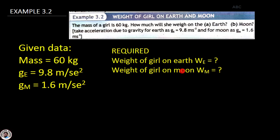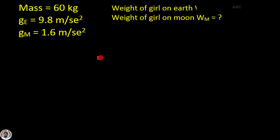تو اس کے لئے میں use کرتا ہوں equation: W = mg۔ یہ equation میں use کروں گا، اور اس equation کے ذریعے میں weight of girl on Earth find out کروں گا اور weight of girl on Moon find out کروں گا۔